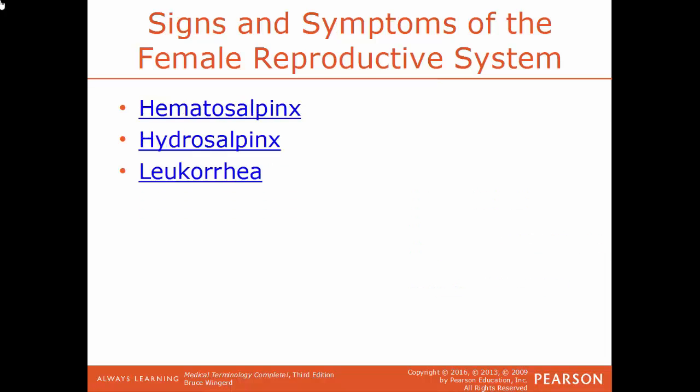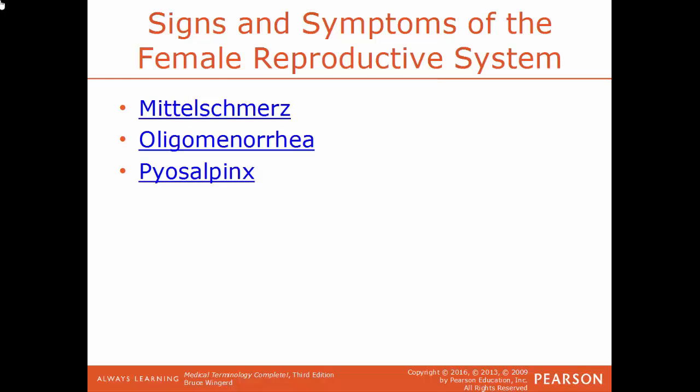Hematosalpinx is having blood in the fallopian tube. Hydrosalpinx is the buildup of fluid in the fallopian tube, usually caused by an infection or an injury. Leukorrhea is having a whitish discharge from the vagina. Mastalgia is pain in the breast. Menorrhagia is having an abnormally heavy bleeding during menstruation. Metrorrhagia is abnormal bleeding from the uterus, particularly between menstrual periods. Mittelschmerz is a German word meaning middle pain — one-sided lower abdominal pain often associated with ovulation. Oligomenorrhea is having light or infrequent menstrual periods. Piosalpinx is an accumulation of pus within the fallopian tube.